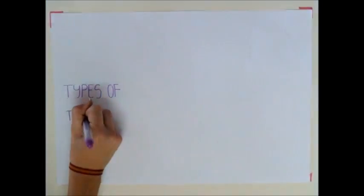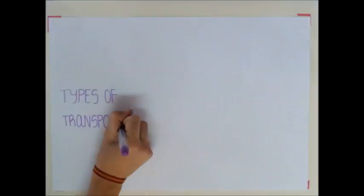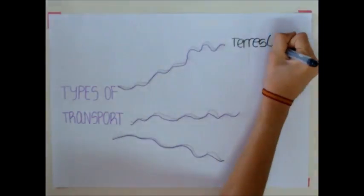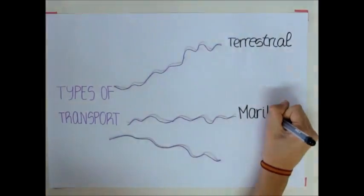Types of transport. There are three types of transport. Terrestrial, that go on the surface of the earth by roads and railways. Maritime, go by water.